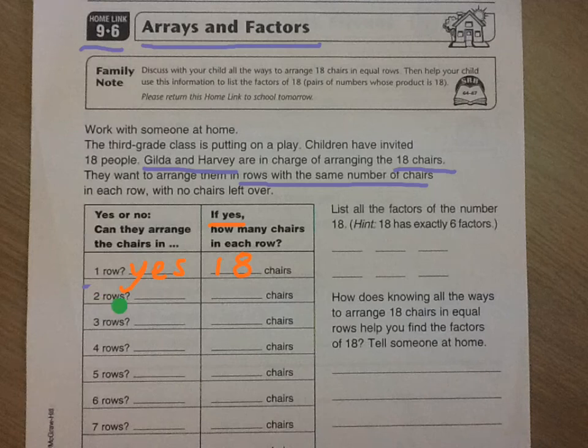You can see our rows are even. We have even rows with nine in each row, so again the answer is yes and we have nine chairs in each row here. It's asking you to list all of the factors of the number 18. If these numbers go into 18 evenly then they are factors, so already we have 1 and 18 are factors of 18 as well as 2 and 9.